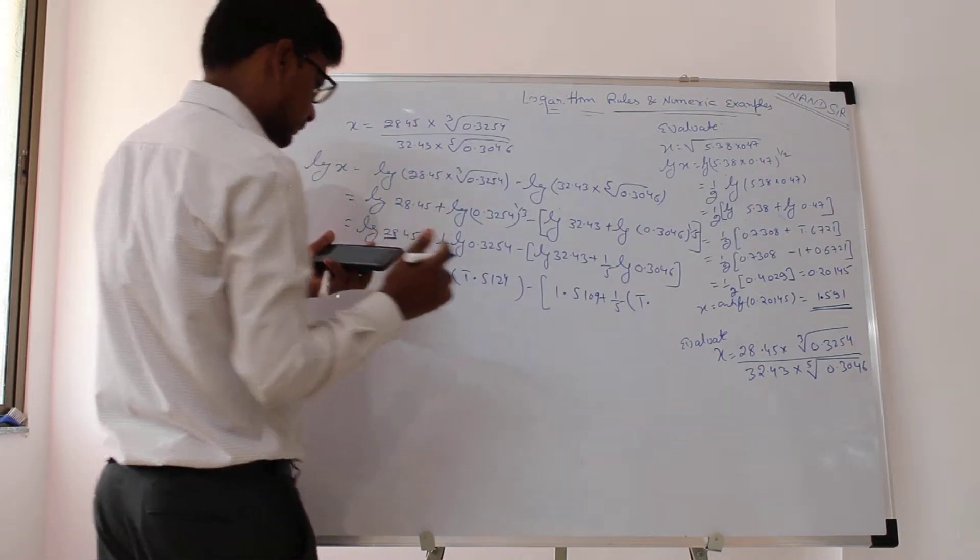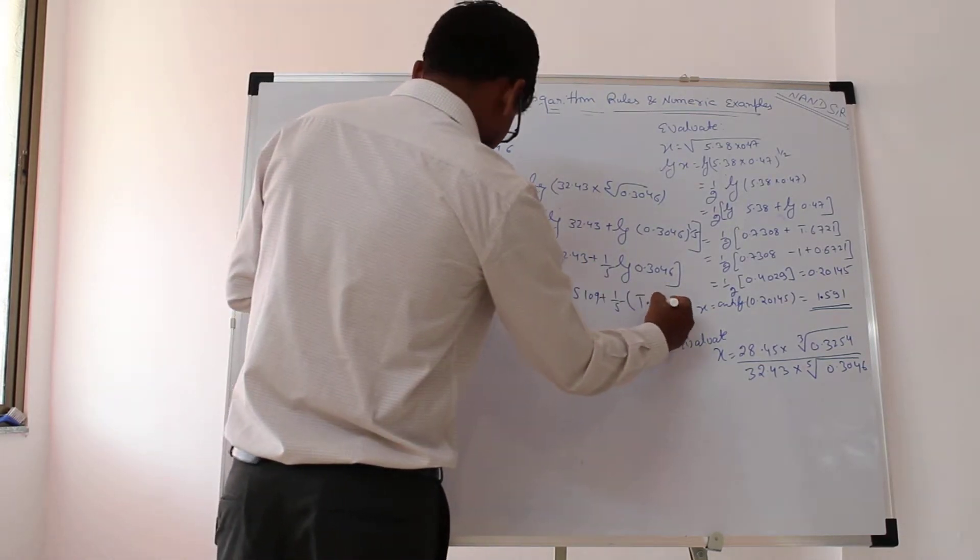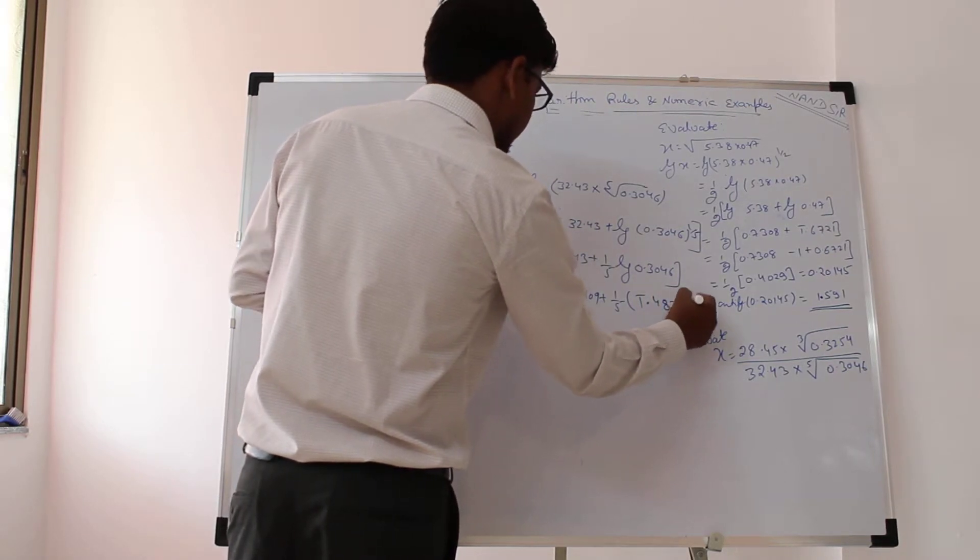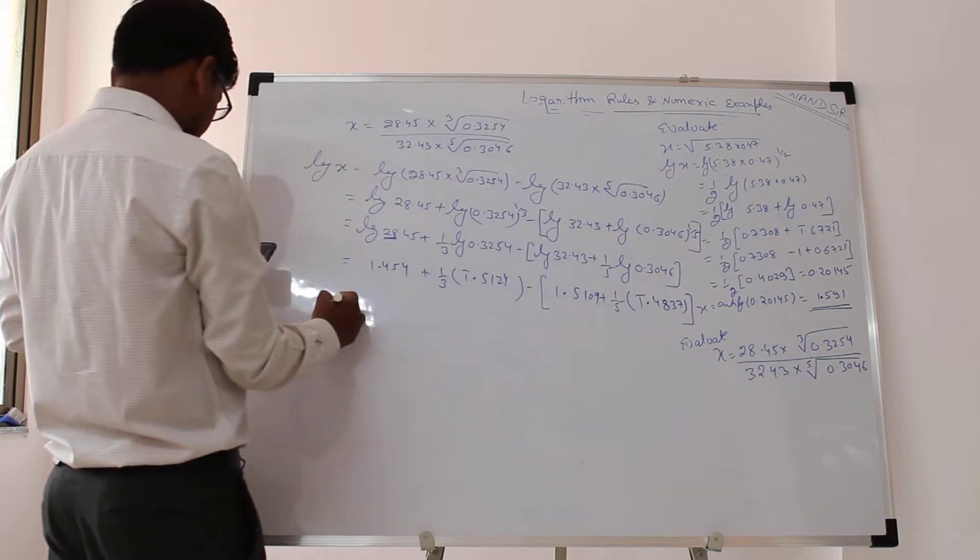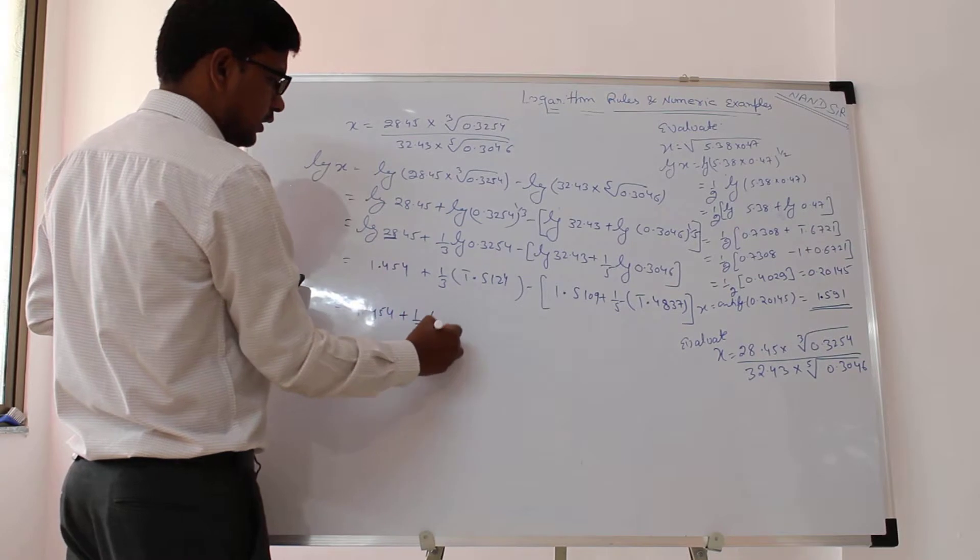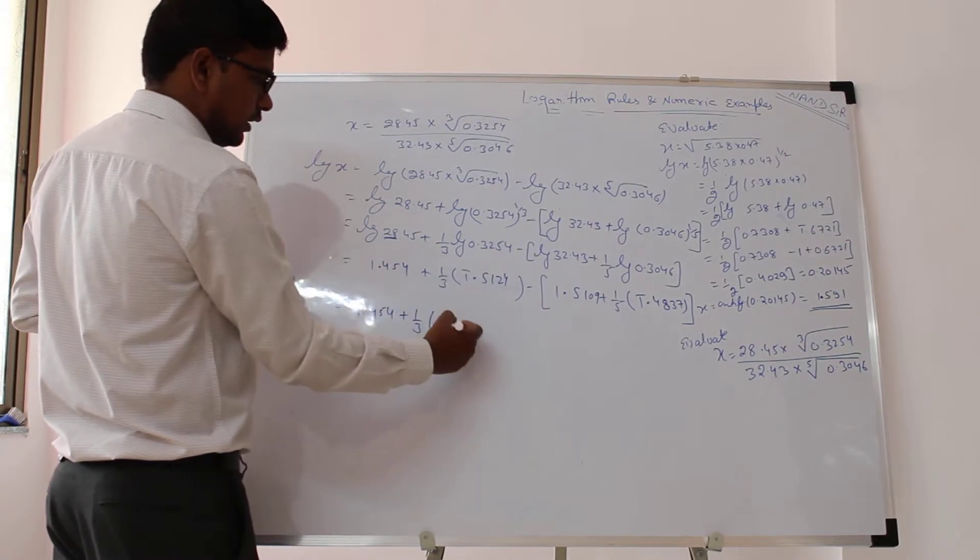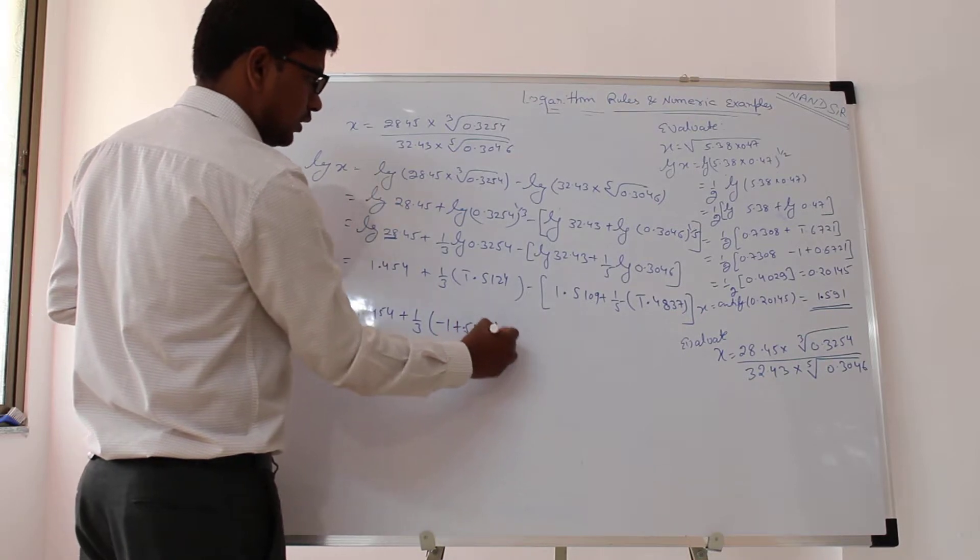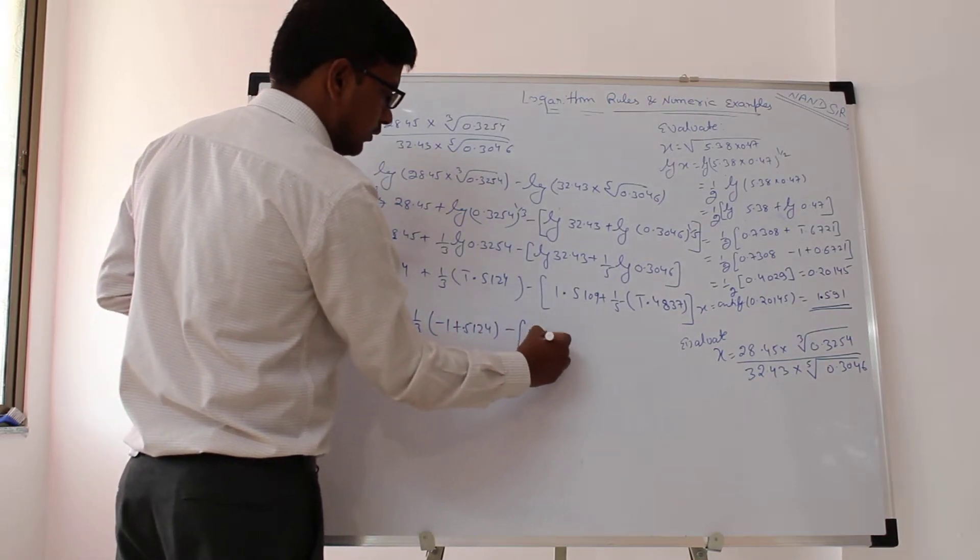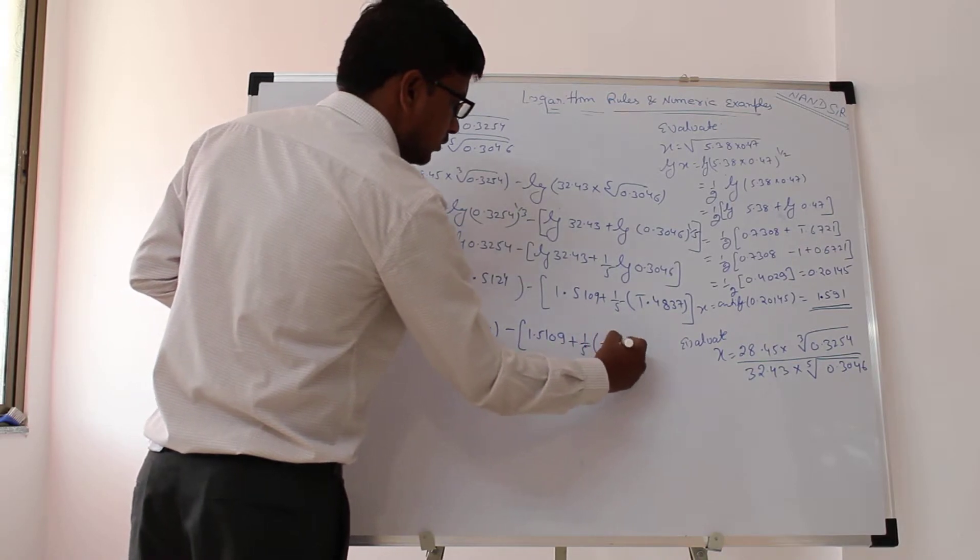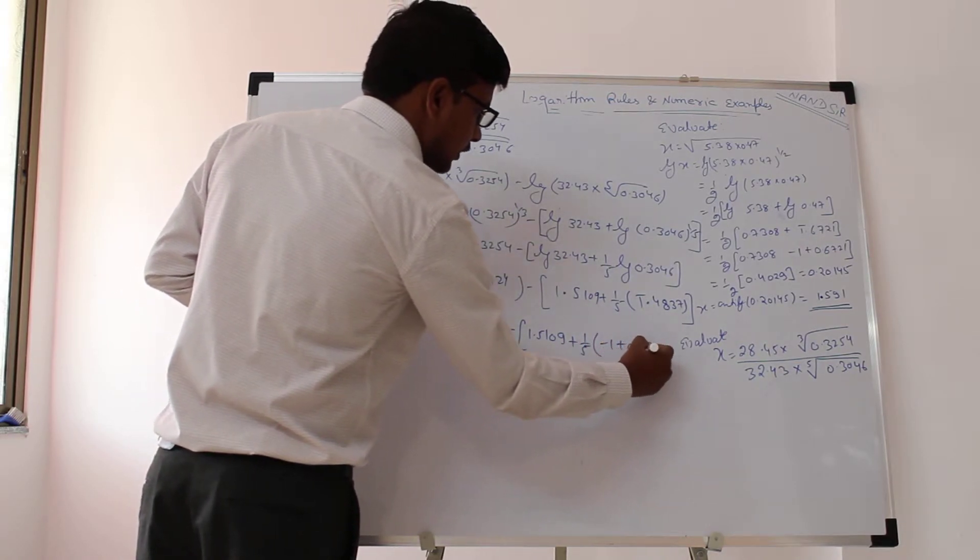Next one will be 0.4837, and it can be 1.454 plus 1 by 3—we have explained—this is minus 1 plus 0.5124 minus 0.5109 plus 1 by 5, minus 1 plus 0.4837.